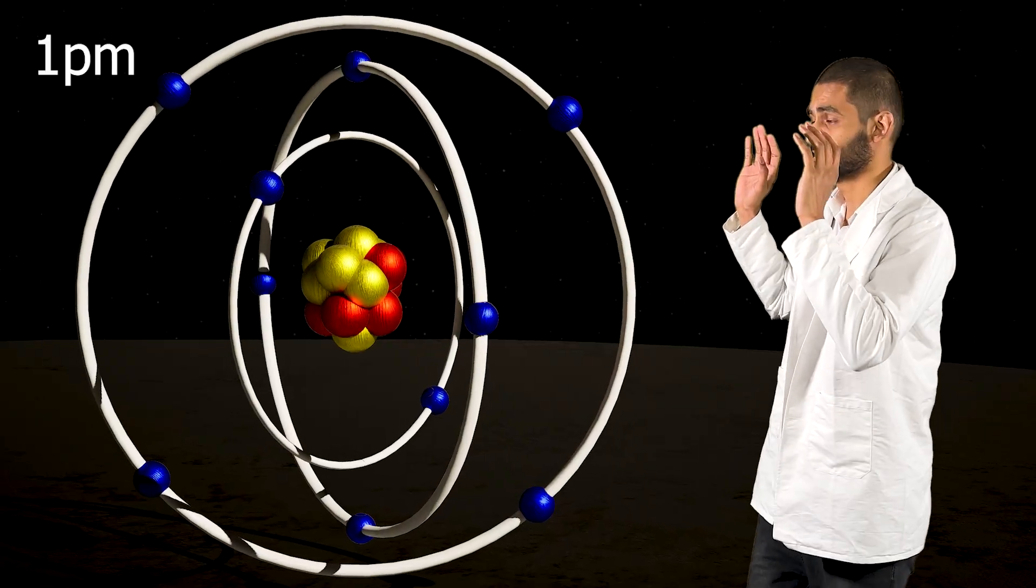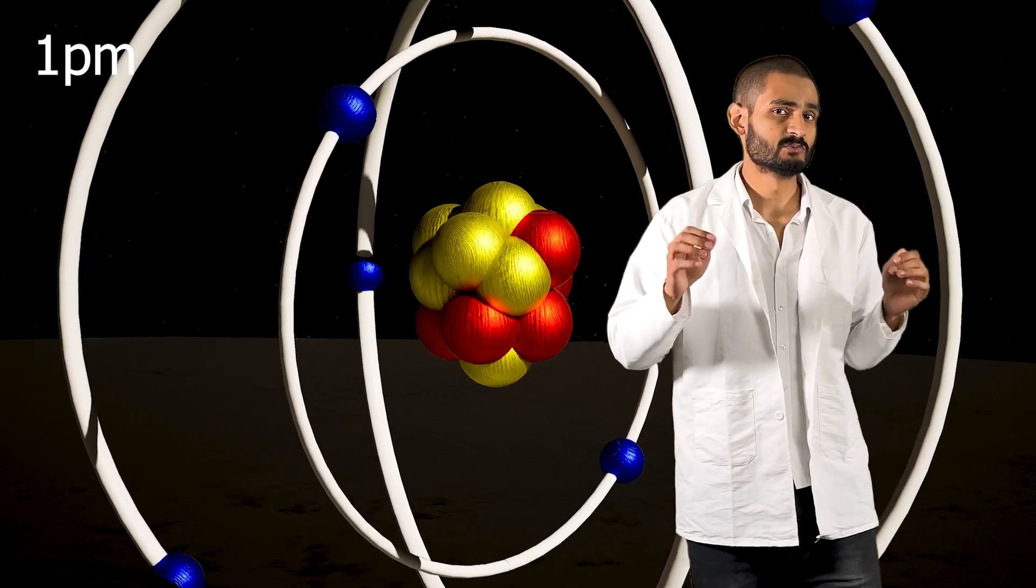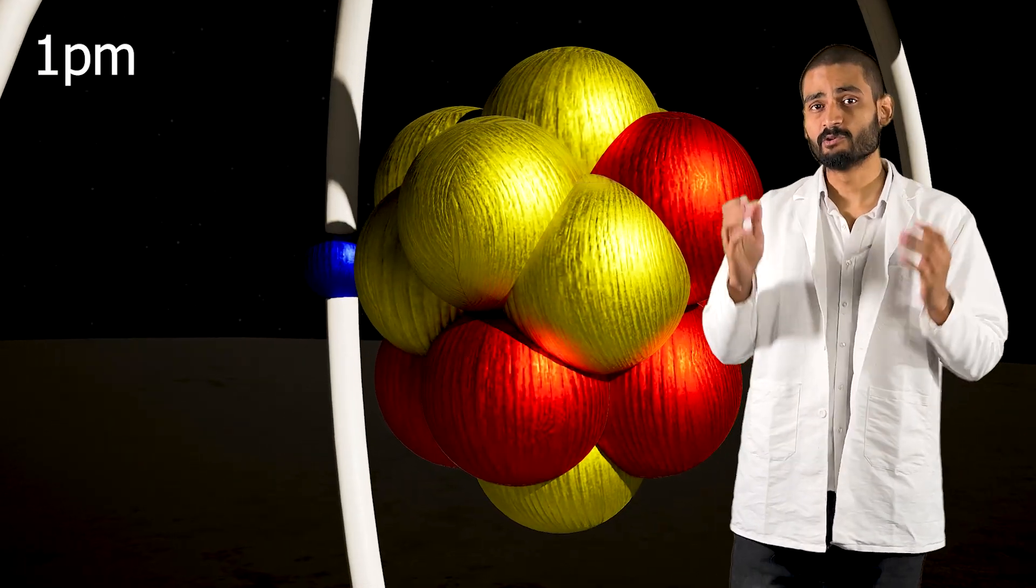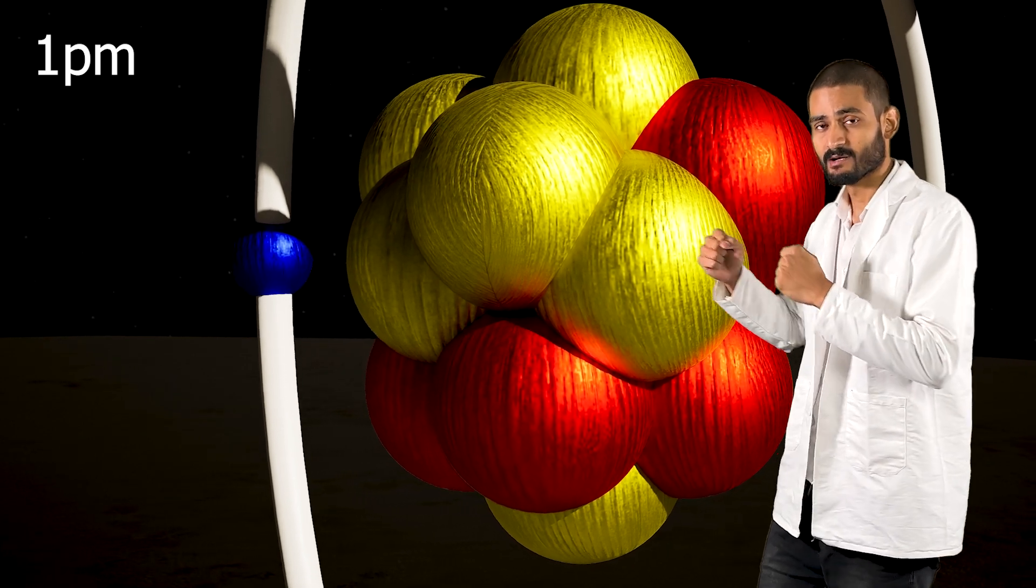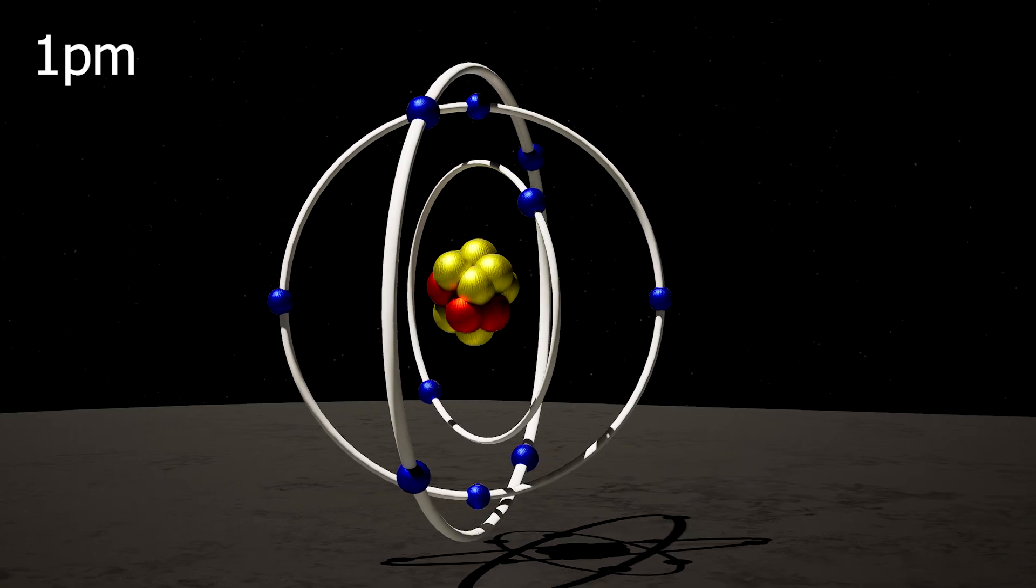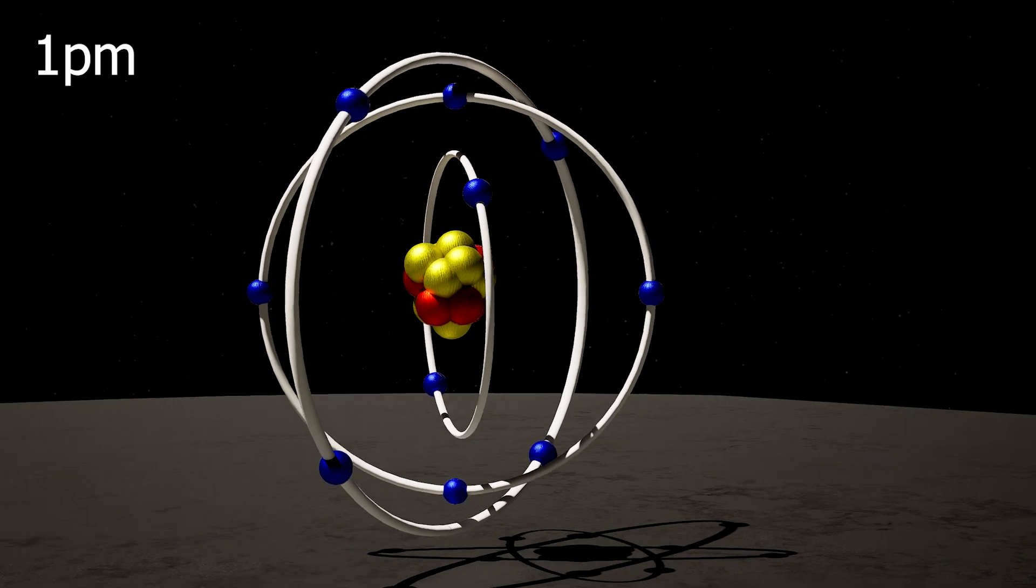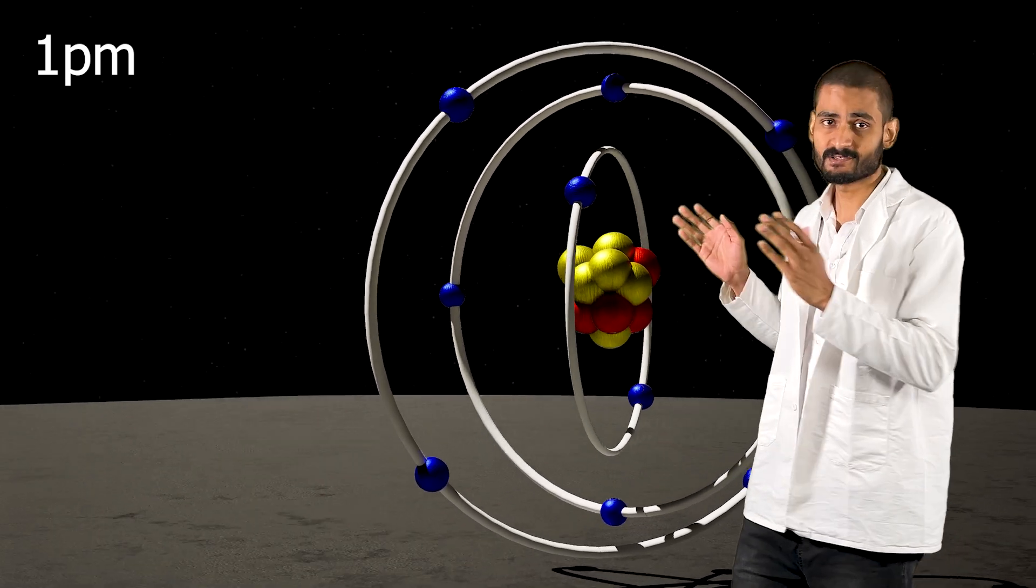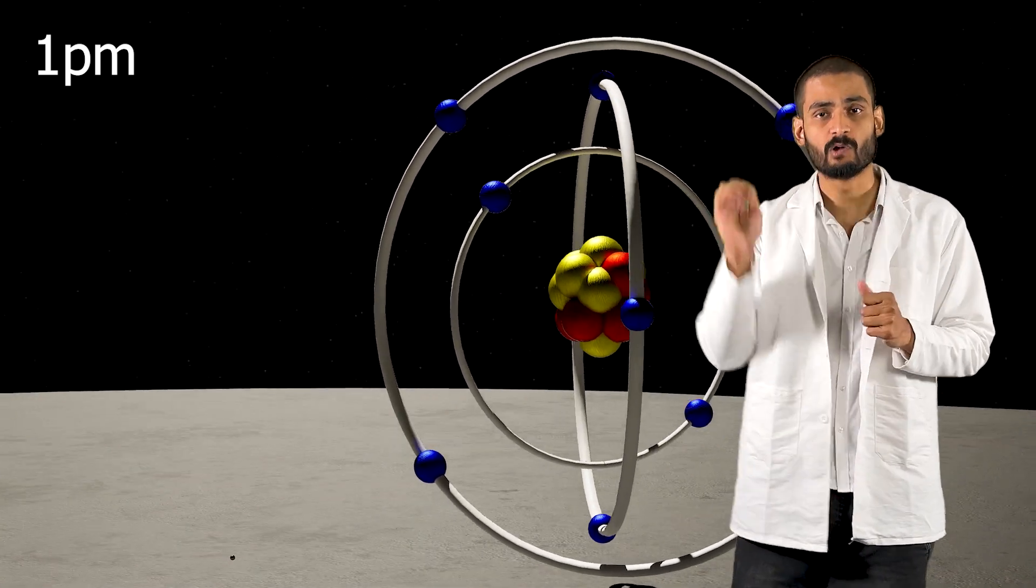This right here is an atom at 1 picometer. Now picometers are used to mark the size of extremely small objects. The strong nuclear force which binds the protons and neutrons together also come in this range at about 1 to 2 picometers only. But don't get confused by this big 3D design. Because atoms are mostly empty space, meaning these protons and neutrons and even the electrons that you are seeing here, in reality they are extremely small.